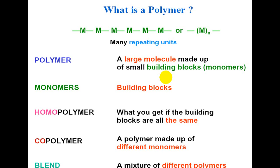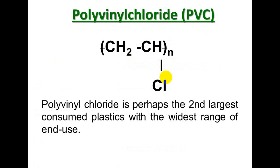On the basis of process, polymers are classified as homopolymer, copolymer, and blends. What is a homopolymer? When all building blocks are the same and they repeat and combine, they form a homopolymer - for example, polythene and PVC. A copolymer is a polymer made up of different monomer units by combining more than one type of monomer. Blends are a mixture of different polymers when they combine together.